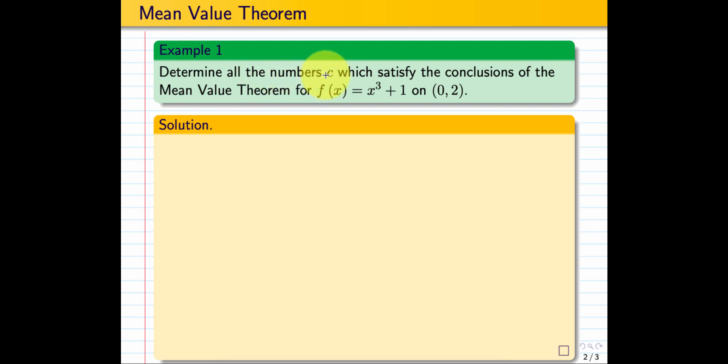Example 1: Determine all the numbers c which satisfy the conclusion of the Mean Value Theorem for f(x) equals x³ plus 1 on interval [0, 2]. f is continuous on [0, 2] because f is a polynomial. f is differentiable on (0, 2).